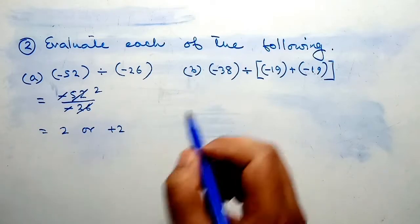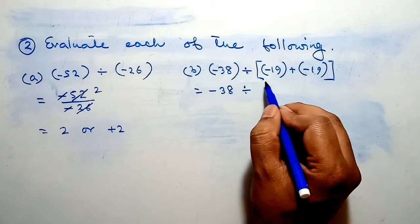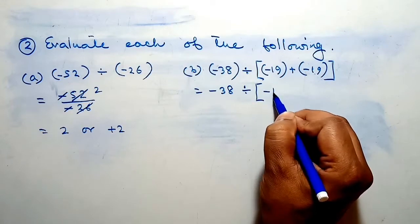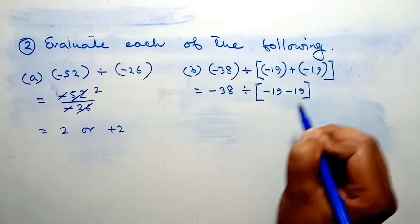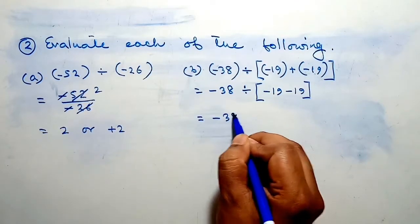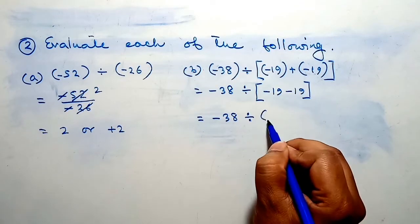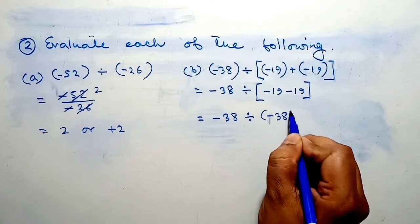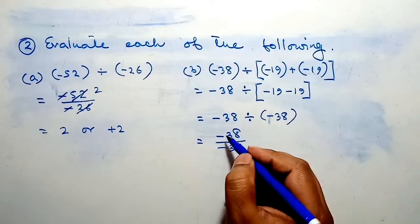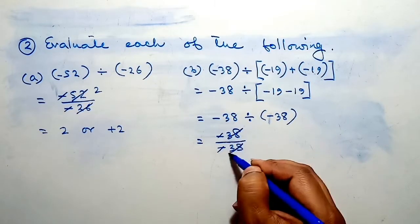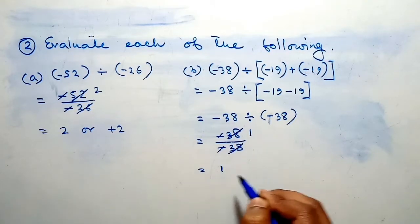Minus 38 divided by minus 38. So this minus and this minus cancel. 38 and 38 cancel, and the answer is 1. Therefore 1 is our answer.